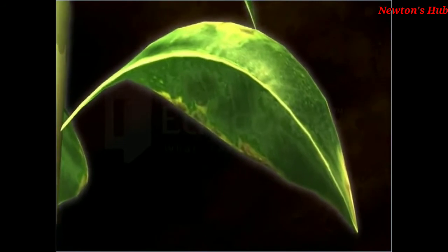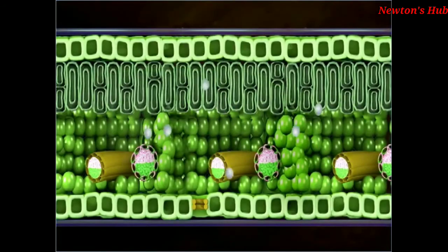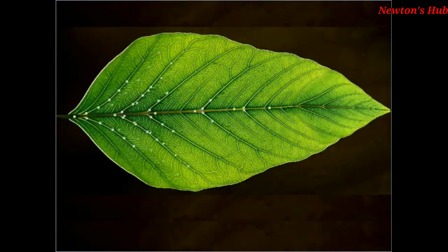The leaf blade is usually thin and flat, reducing the distance through which molecules travel. These molecules make their way by diffusion. Every leaf has a branching network of tubes which transports water and mineral salts to all the cells, and the sugar products of photosynthesis are removed.